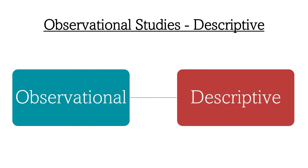When attempting to determine the origin of a disease, descriptive studies are typically the first kind of research done. These studies offer details about the disease's patterns such as its frequency, the demographic segment affected, the geographic location, and whether or not people were afflicted for a specific amount of time. Individuals with a disease provide information about their age, sex, food, employment, drinking habits, home and work locations, and places visited. Commonalities are identified in order to identify a potential cause, and theories are put forward regarding the illness's etiology.